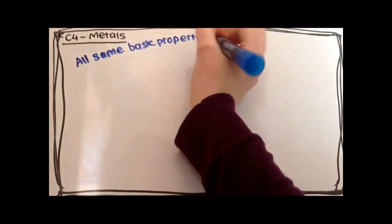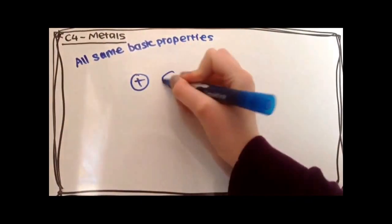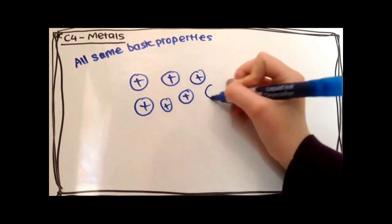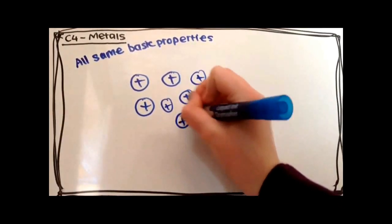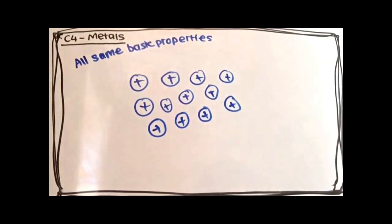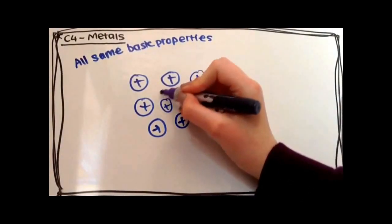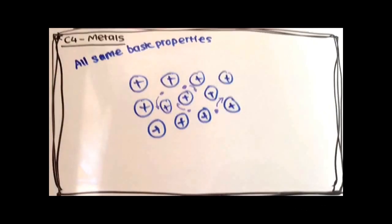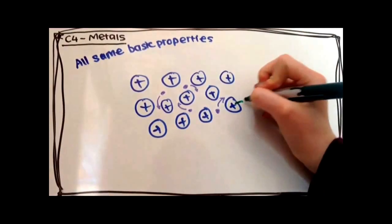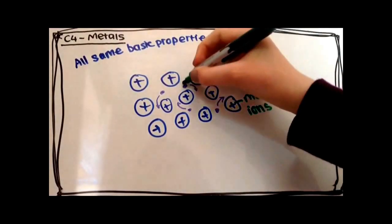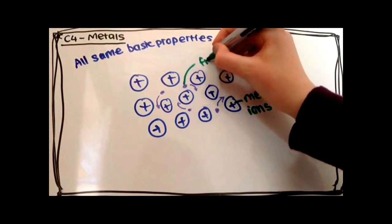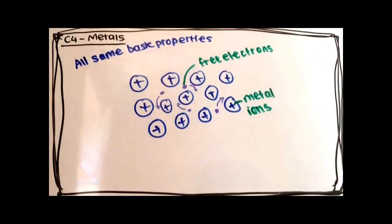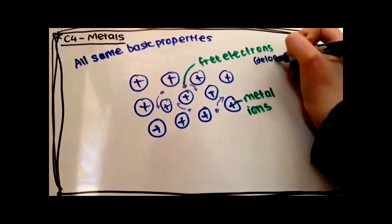C4 Metals Revision. All metals have the same basic properties, and this is due to their bonding. They're held together with metallic bonds. These have outer electrons of each atom, and they can move freely. This creates a sea of delocalised free electrons throughout the metal, which gives it many properties.